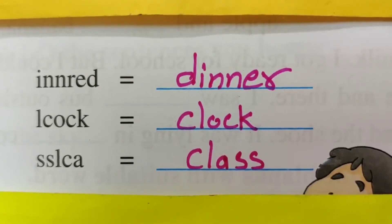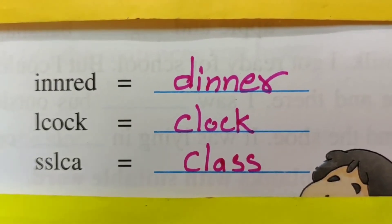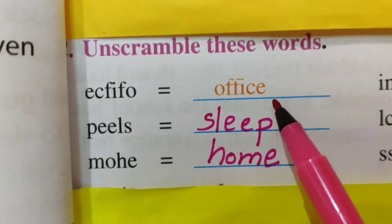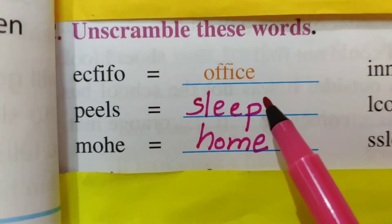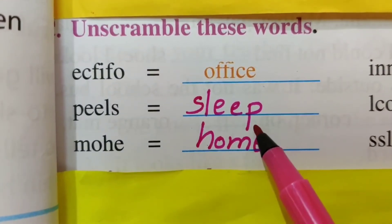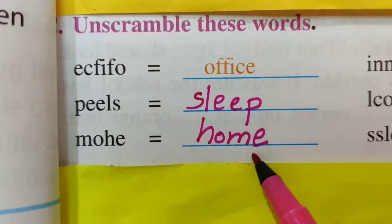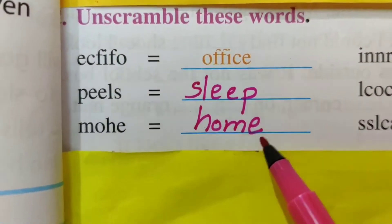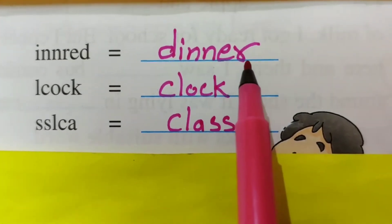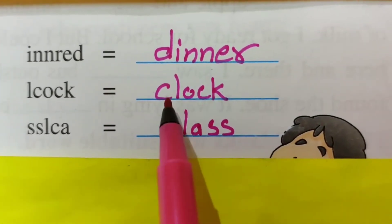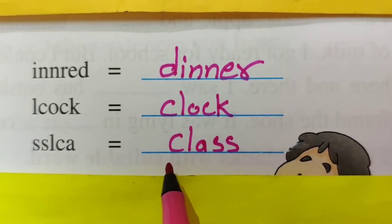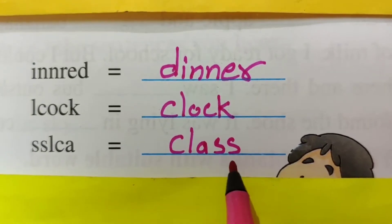Shall we repeat once again? O-F-F-I-C-E — office. S-L-E-E-P — sleep. H-O-M-E — home. D-I-N-N-E-R — dinner. C-L-O-C-K — clock. C-L-A-S-S — class.